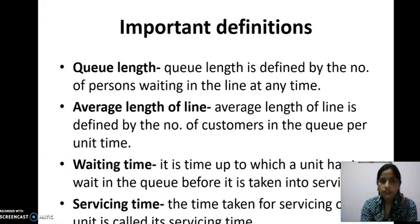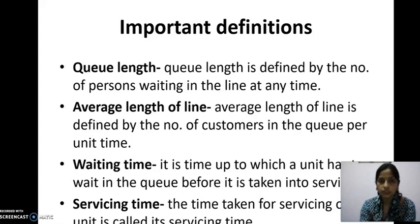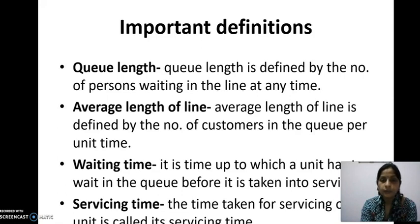There are some important definitions in queuing theory. First: queue length, defined as the number of persons waiting in the line at any time. Second: average length of line, defined as the number of customers in the queue per unit time. This is defined in advance — for example, when we go to a doctor, there is an average length, meaning the doctor will check a fixed number of patients in a given time period.